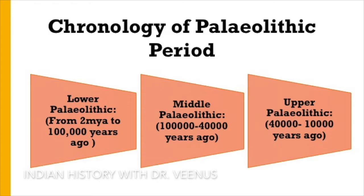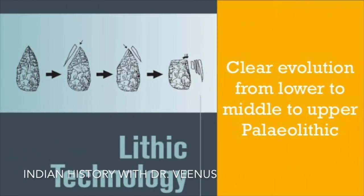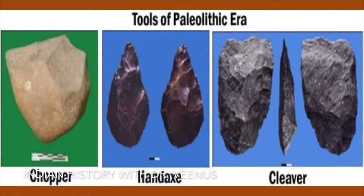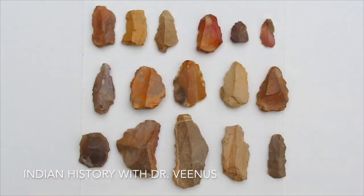The Lower Paleolithic period in India is generally dated from 2 MYA to 100,000 years ago. The Middle Paleolithic from 100,000 to 40,000 years ago, and the Upper from 40,000 to 10,000 years ago. Stratigraphic profiles have revealed a clear evolution of lithic technology from Lower to Middle to Upper Paleolithic. Though early Paleolithic tools including large chopping tools, hand axes and cleavers did not cease to be used, smaller and lighter flake tools were the evident choice by the Middle Paleolithic.